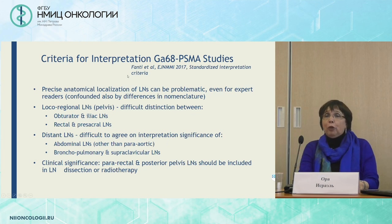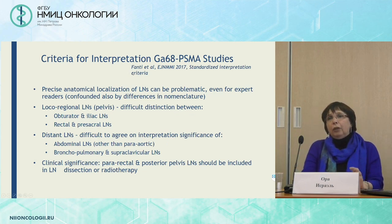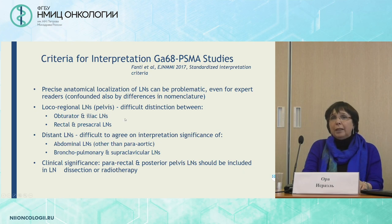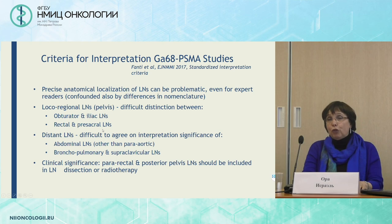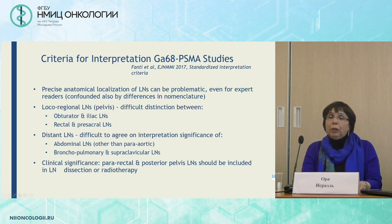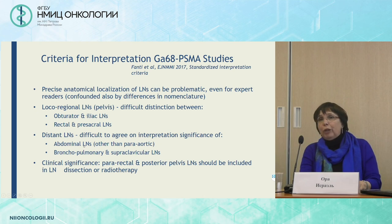This paper is very important because it brought together a large number of highly respected experts in reading PSMA studies, who looked for criteria for interpretation. When they looked at lymph nodes, they found a number of issues: in the pelvis, it was difficult to differentiate between obturator and iliac lymph nodes, and between rectal and presacral lymph nodes — an important difference for surgeons. Also, looking at distant lymph node metastasis, there was difficulty agreeing on the significance of uptake in abdominal and bronchopulmonary lymph nodes.